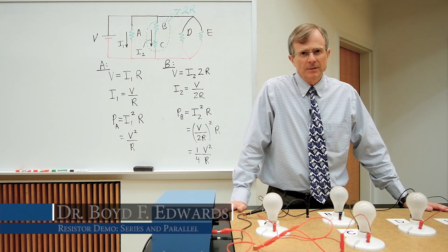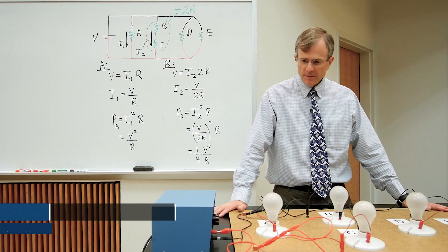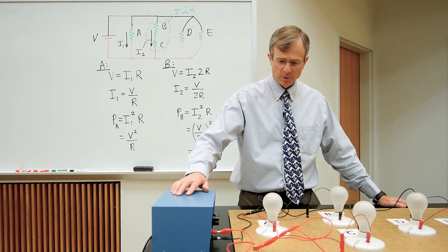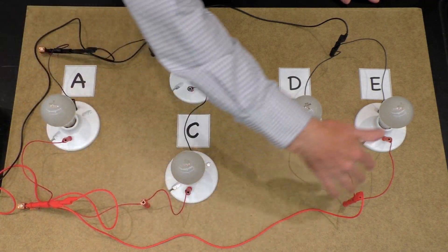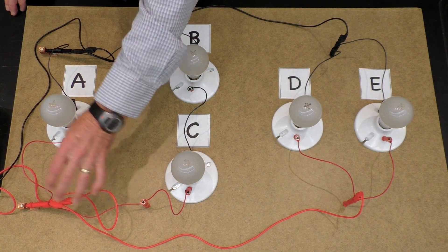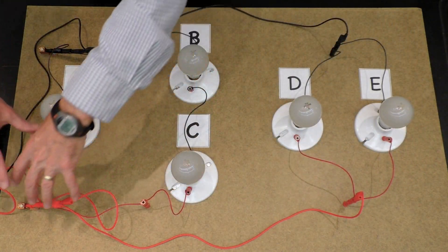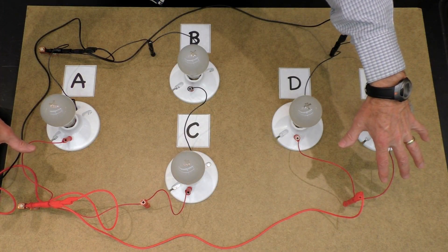This is a demonstration of resistors in series and in parallel. What I have here is a voltage power supply. I'm going to supply about 12 volts to this half of the circuit. You see all the red wires are all interconnected with each other. So you can think of the voltage here being 12 volts.